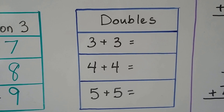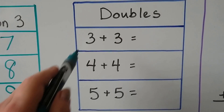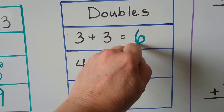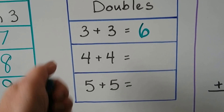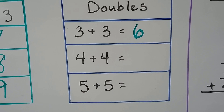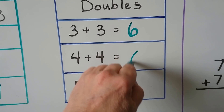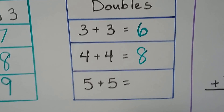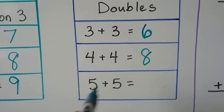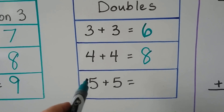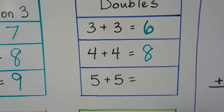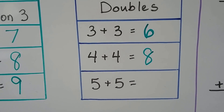We can use doubles. Three plus three is three plus three more — that's six. We could also count on: three, four, five, six. Four plus four is equal to eight. We can count on with a four: four, five, six, seven, eight. Five plus five — you have five fingers on one hand and five fingers on your other hand, and five toes on one foot and five toes on another foot. Do you know how many fingers you have? You have ten.